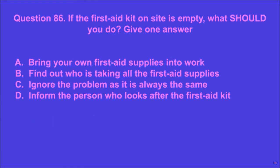Question 86: If the first aid kit on site is empty, what should you do? Give one answer. A: bring your own first aid supplies into work, B: find out who is taking all the first aid supplies, C: ignore the problem as it is always the same, D: inform the person who looks after the first aid kit. D is the correct answer.